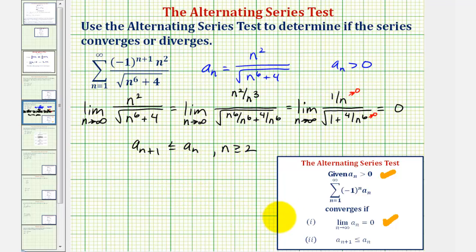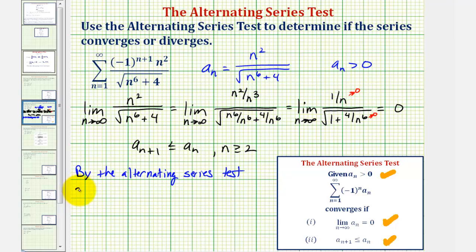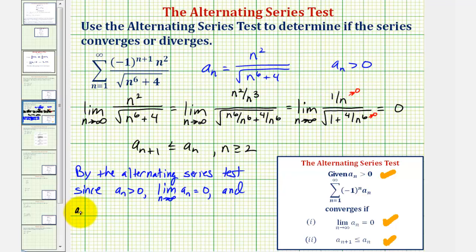Therefore, the alternating series does converge by the alternating series test. By the alternating series test, since a sub n is greater than zero, the limit as n approaches infinity of a sub n equals zero, and a sub n plus one is less than or equal to a sub n for n greater than or equal to two, the given alternating series converges.